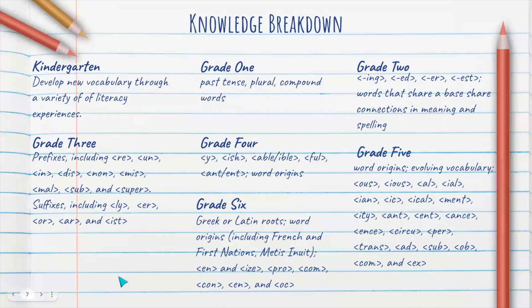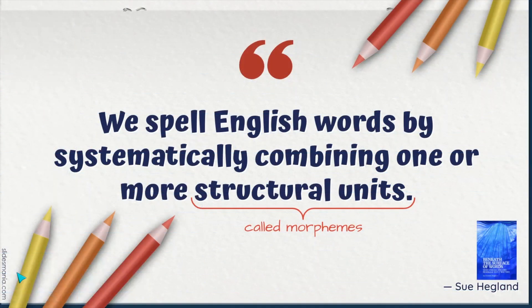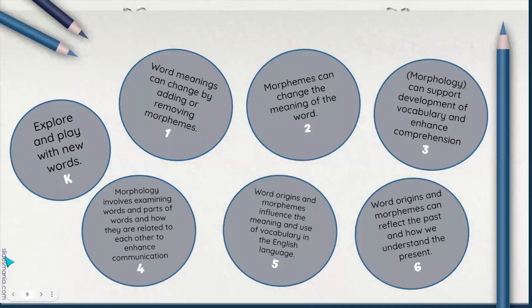When we look at the knowledge breakdown that is present in the curriculum, it provides us a really great insight into how we might develop and explore morphology with our students. If your students do not have a particularly deep background, you can look towards previous grades for a place to start. We spell English words by systematically combining one or more structural units called morphemes, and you will see in the new curriculum that the word morpheme or morphology is explicitly mentioned in grades one through six in the learning outcome.